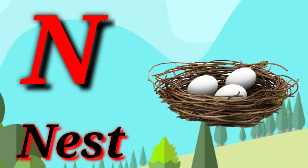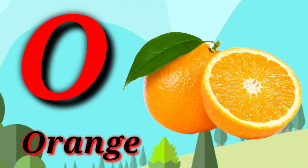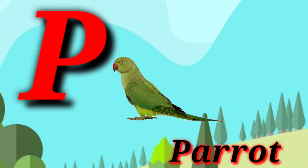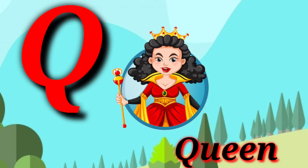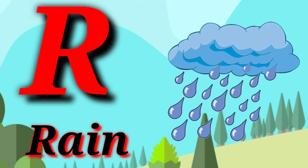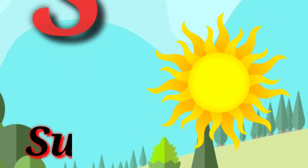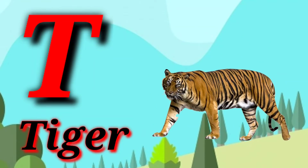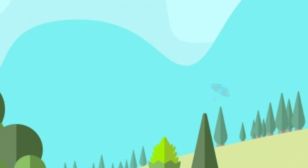O for orange, P for parrot, Q for queen, R for ranch, S for sun, T for tiger.